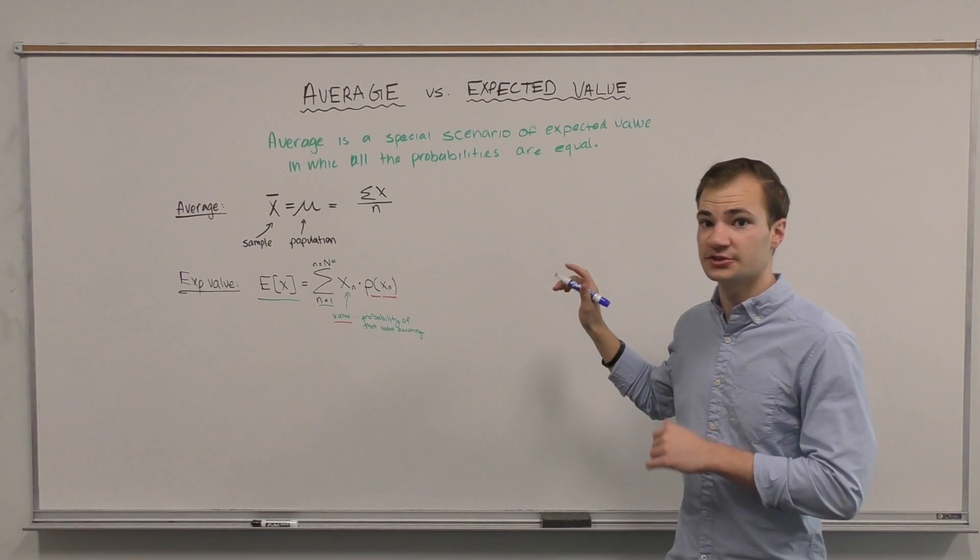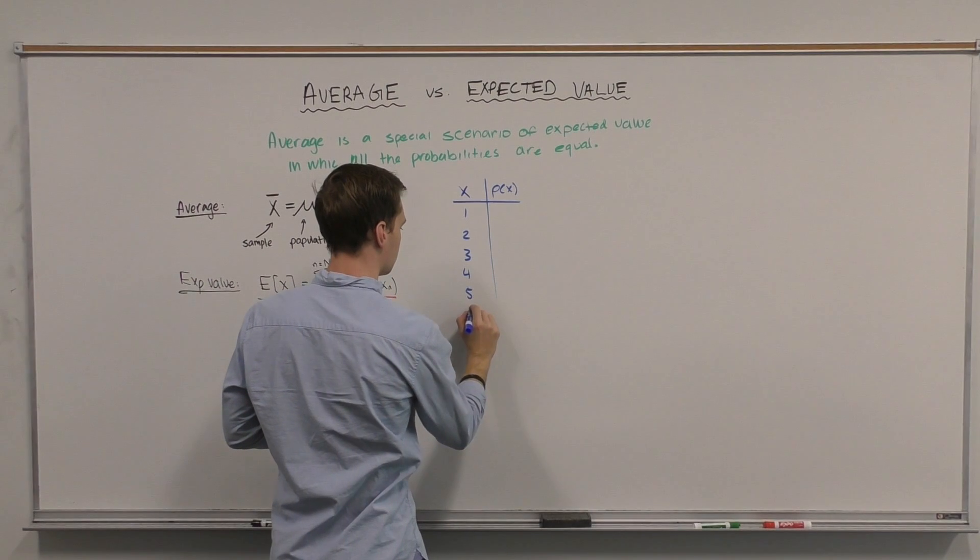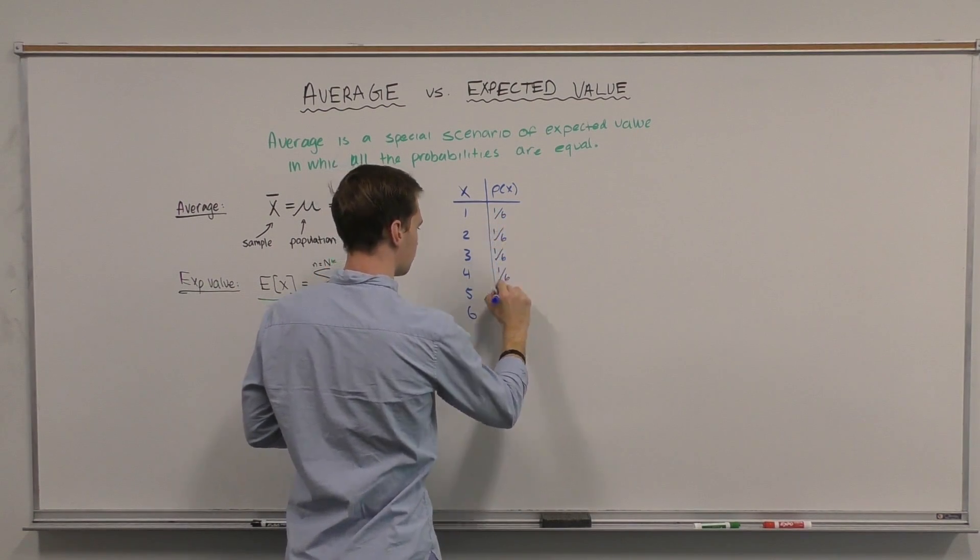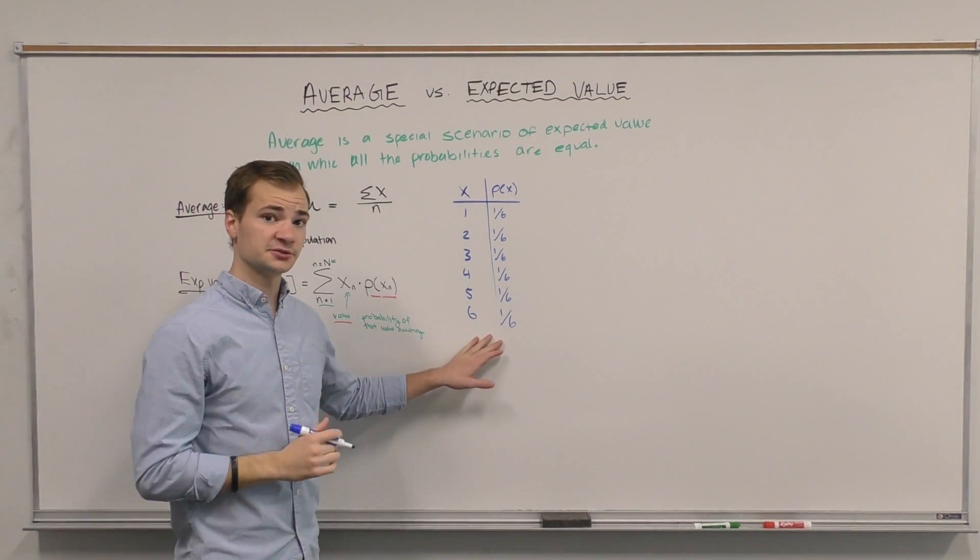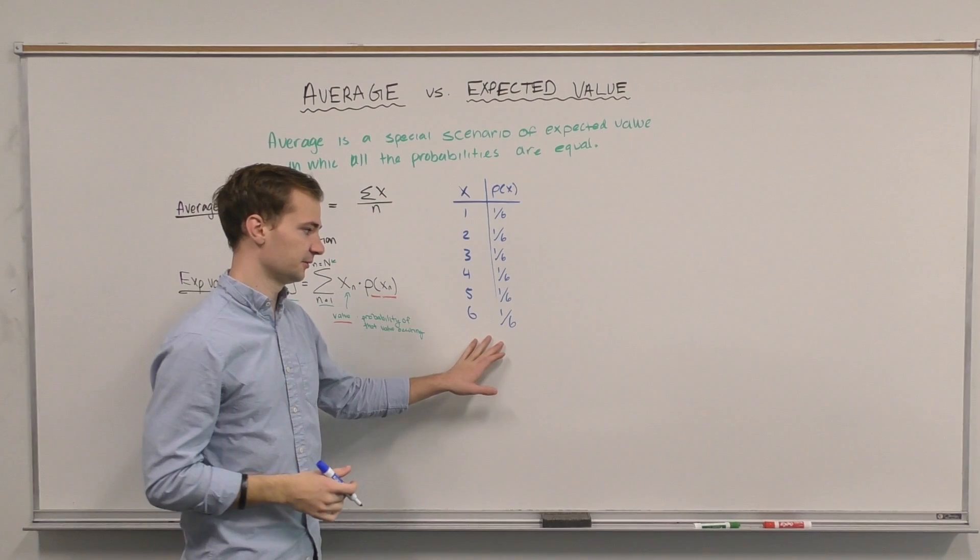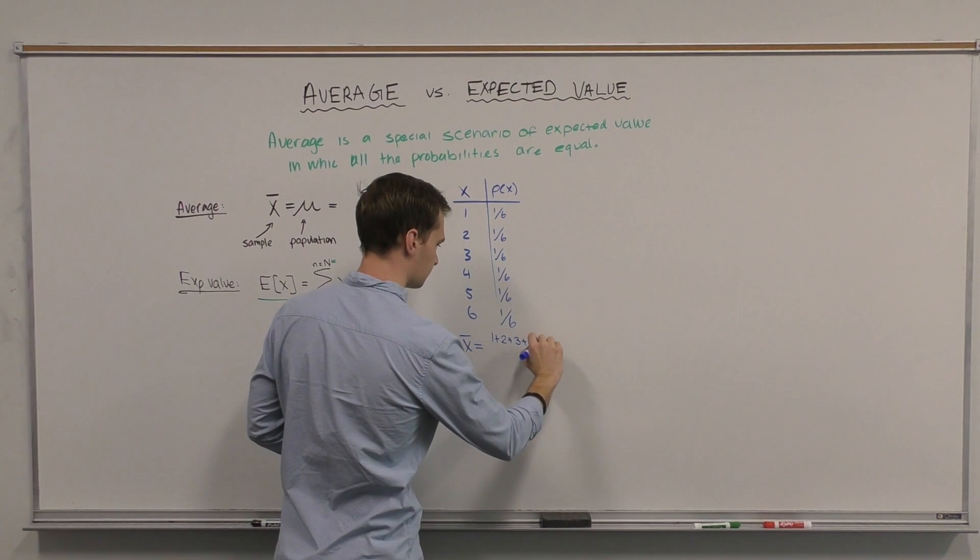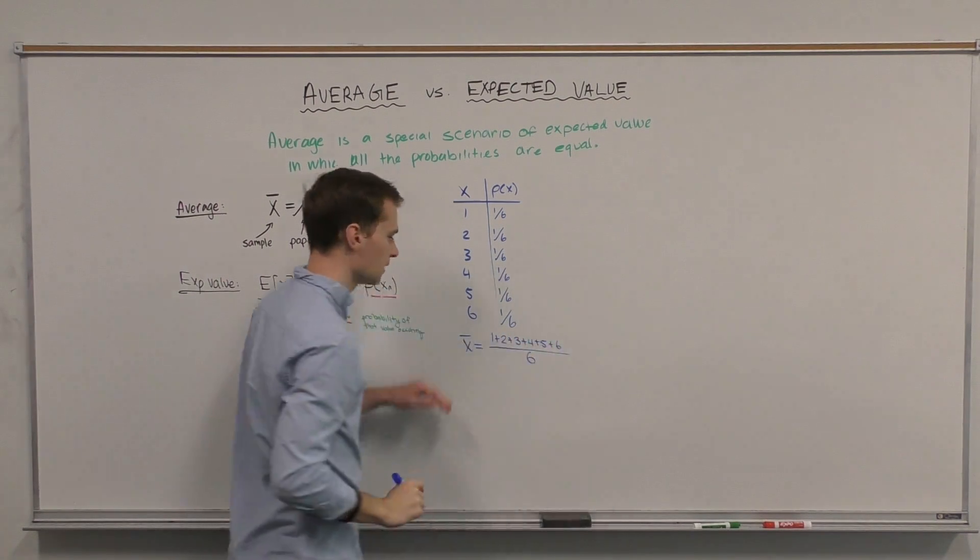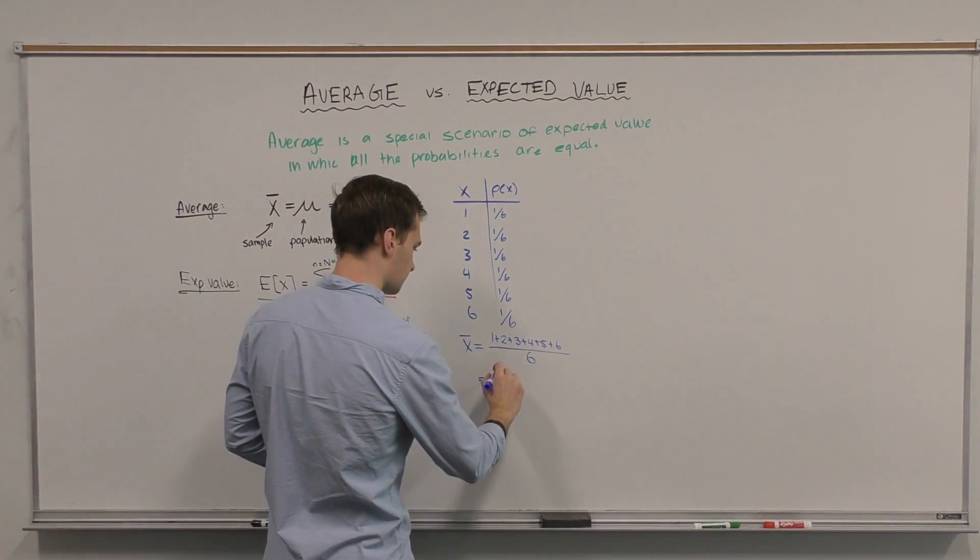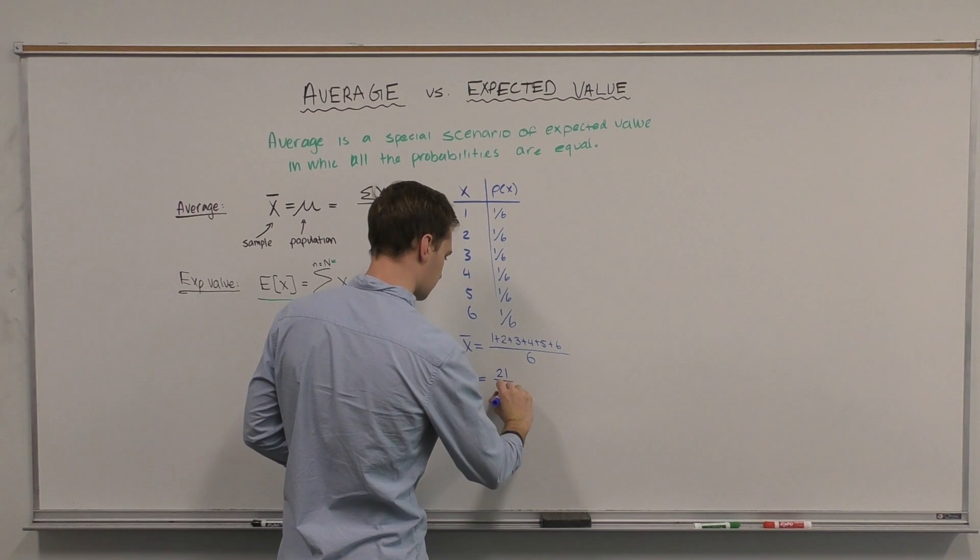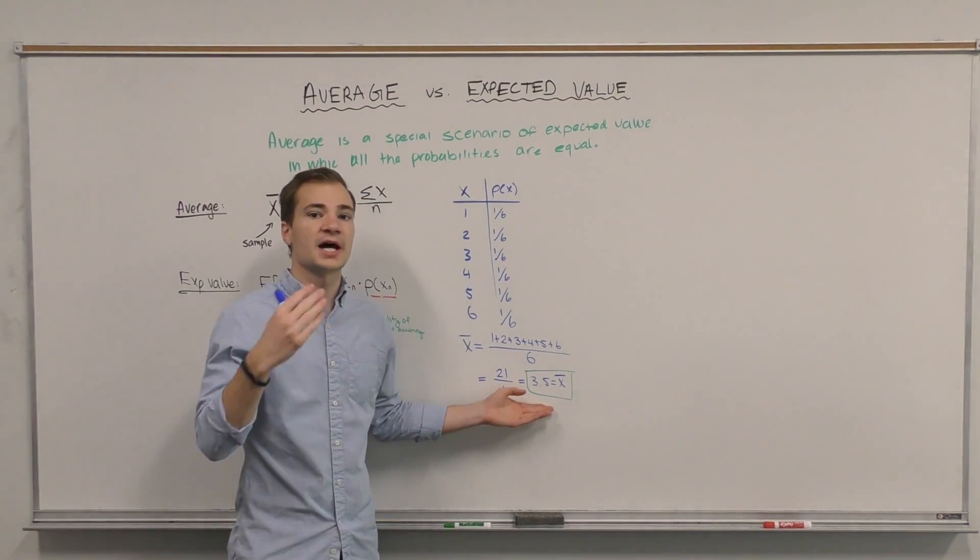Normally, a normal die would have this distribution. We have a one in six chance of rolling any of these values. The average for this is fairly easy to calculate. We can almost do it in our heads—the sum of our values divided by the total number of values we have.